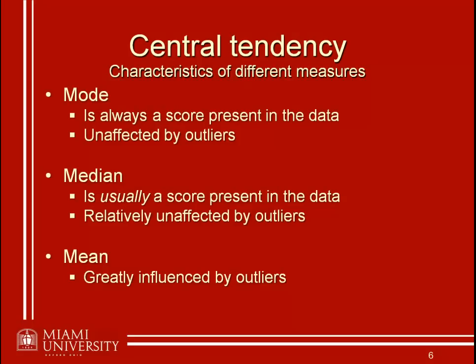The mean is greatly influenced by outliers. If you're in a situation where your data set might be susceptible to outliers, that might make the mean a measure you do not necessarily want to report. Think about adding one extreme score of, say, 1,000 to our previous data set where the sum was 63, divided by 9, giving us 7. Adding that outlier of 1,000 brings our new sum to 1,063, and when we divide by 10, it changes our mean from 7 to 106.3 — a huge change from just one single outlier. This is often an undesirable property of the mean, even though it does take every single score into account.